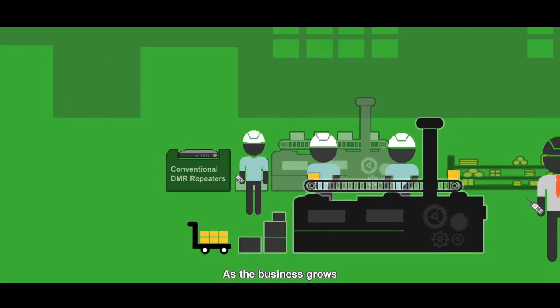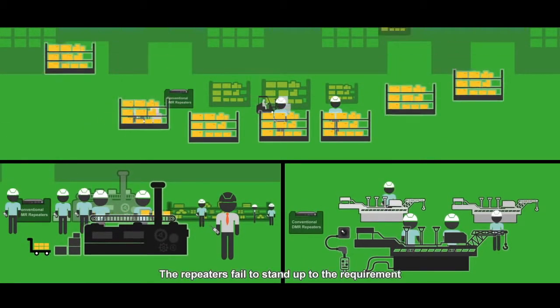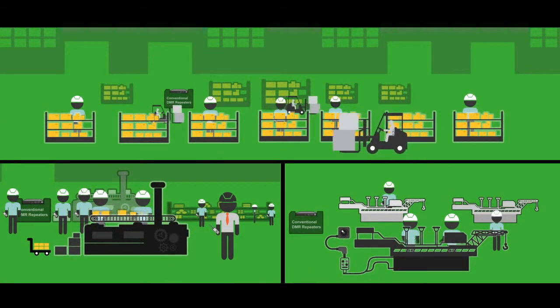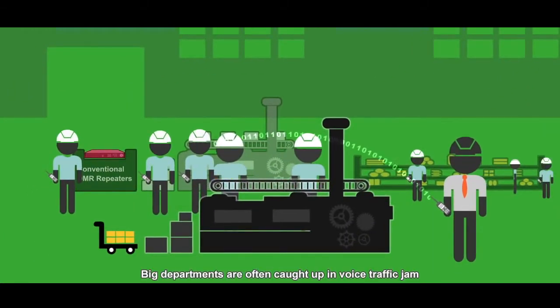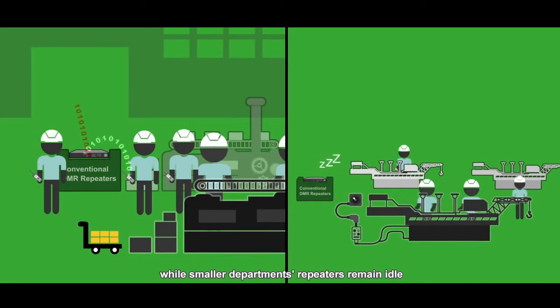As the business grows, more people are employed and more departments established. The repeaters fail to stand up to the requirement. Big departments are often caught up in voice traffic jam, while smaller departments' repeaters remain idle.